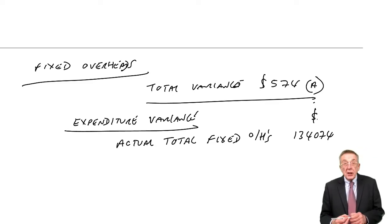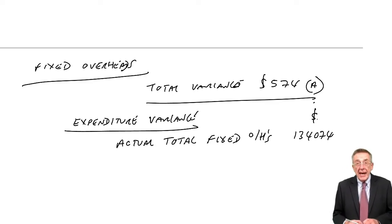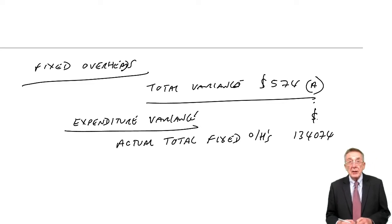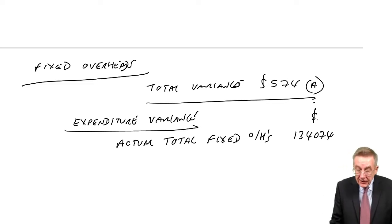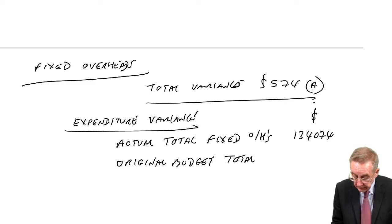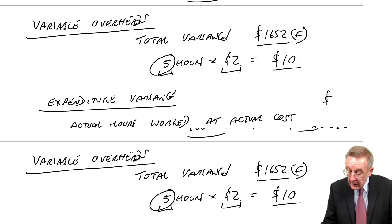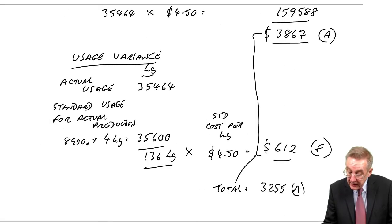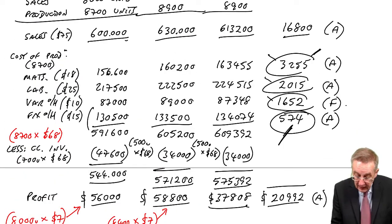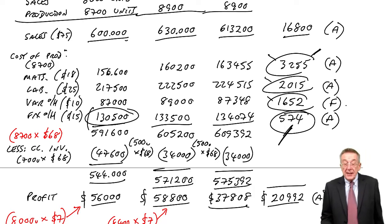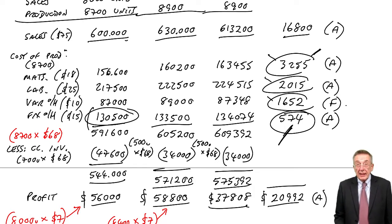The expenditure, I think, is extremely logical because we compare the actual total fixed overheads, which from the question at the very bottom, $134,074. And as I said a minute ago, total fixed overheads shouldn't change whether you produce more, whether you produce less. So we compare with the original budget total.